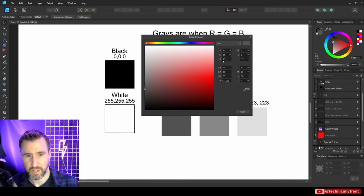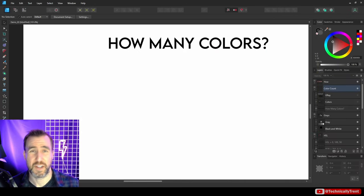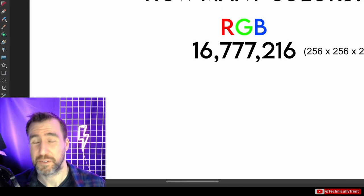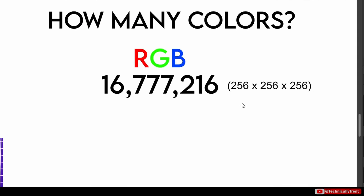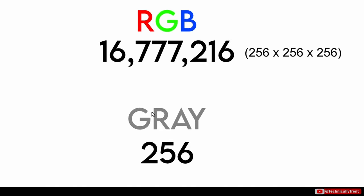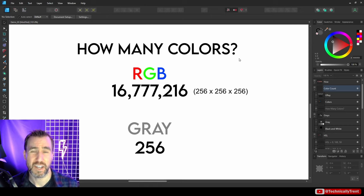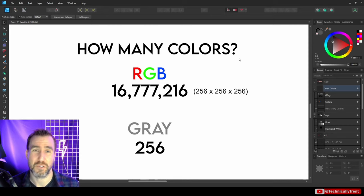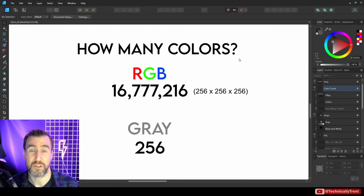Now the big question: how many colors can we possibly have? The answer is about 16 million — that's 256 cubed, the number of combinations across our three channels. A bigger question is how many levels of gray do we have? The answer is 256. So when we convert to black and white, we have to take possibly 16 million colors and convert them to just 256 levels of gray. That's quite a hard problem, and there are many different ways to do it.